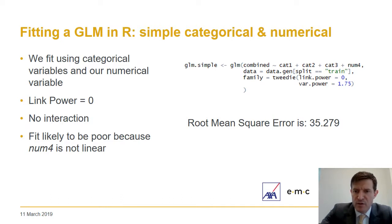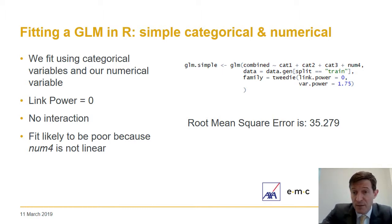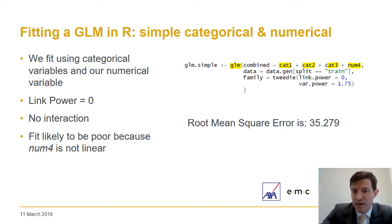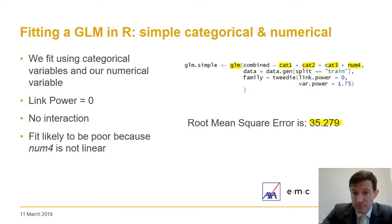We'll come back to the XGBoost results later. First let's look at results from traditional insurance approaches, starting with a naive GLM with only simple factors — no interaction and no special treatment of the non-linear numerical term. This is our base model against which we measure improvements. We can see our root mean squared error here, and over the next model runs we'll see how we improve on that.